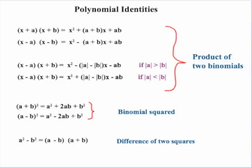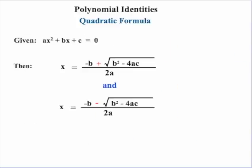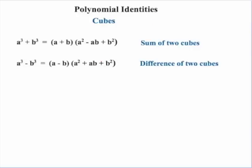A very common identity is the difference of two squares: a squared minus b squared would factor to be a minus b times a plus b. Then we have our quadratic formula for use in cases where we have a quadratic that does not factor. Given the general case ax squared plus bx plus c equals zero, our solutions for x would be the opposite of b plus or minus the square root of b squared minus 4ac, all over 2a.